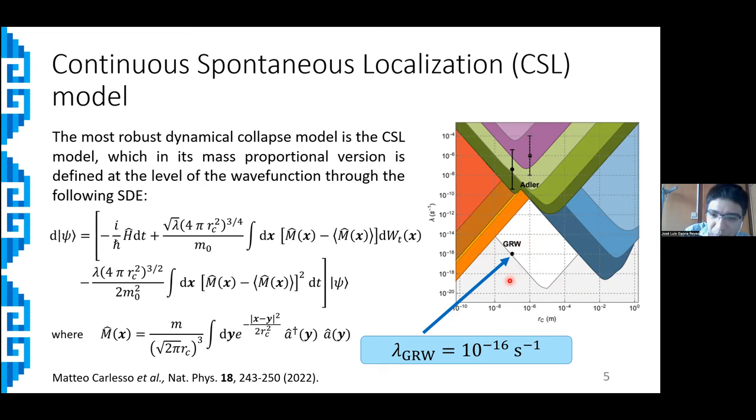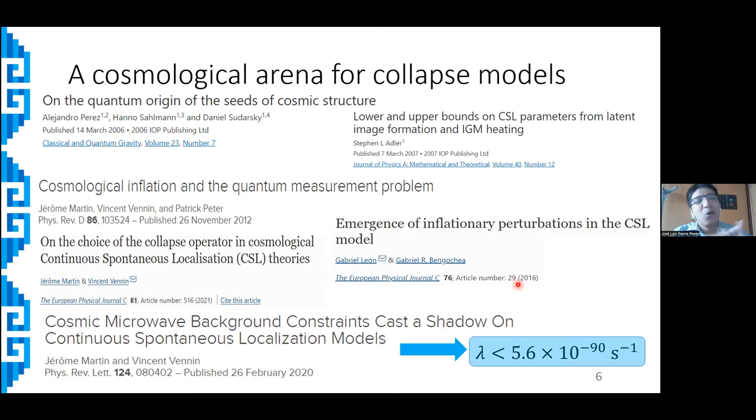and we see that this white region is the space of allowed values of the theories. For example, just as a reference value, if Rc is equal to 10^-7 meters, the corresponding parameter λ that was proposed in one previous model is 10^-16 hertz.